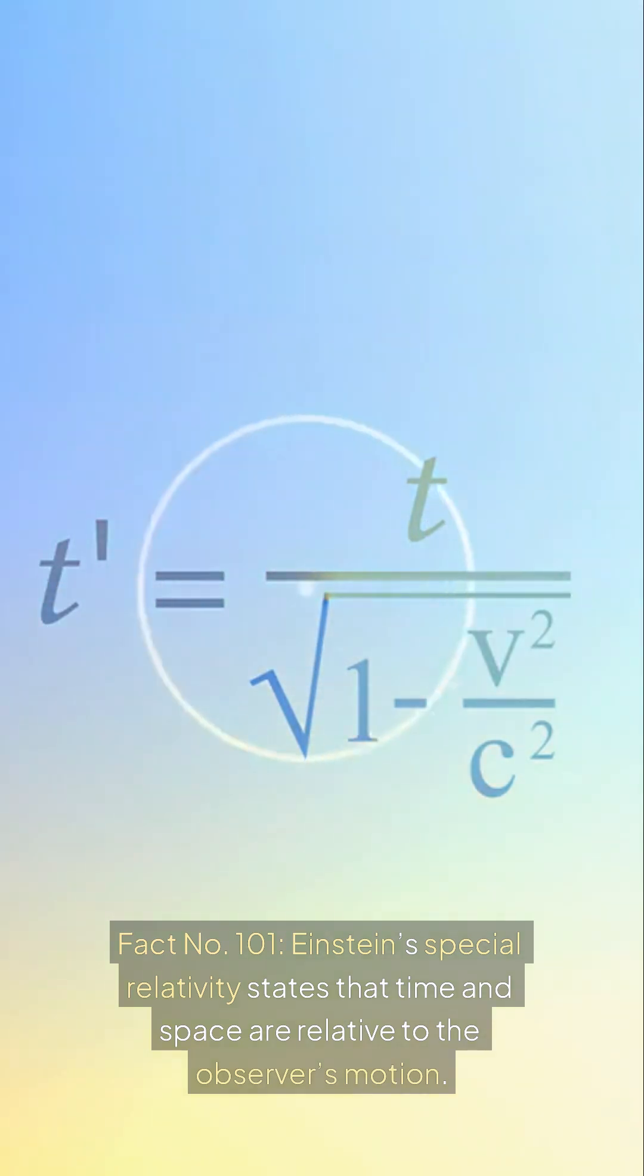Fact number 101: Einstein's special relativity states that time and space are relative to the observer's motion.